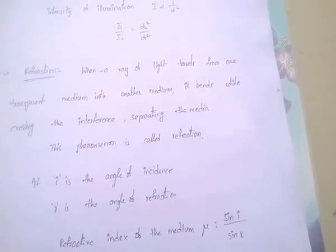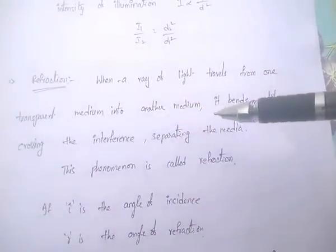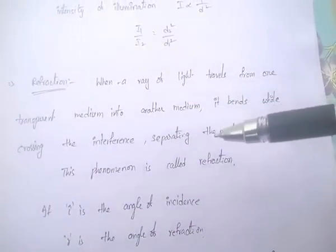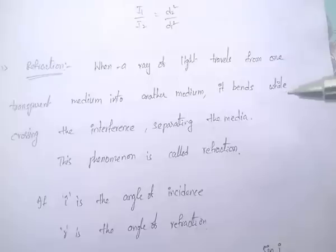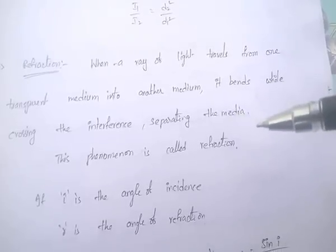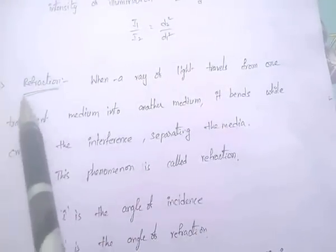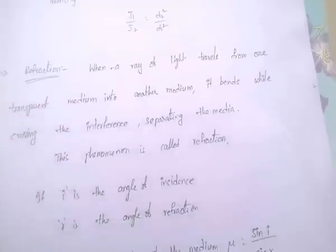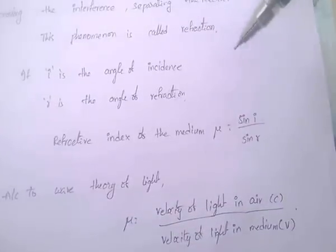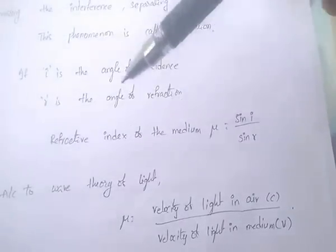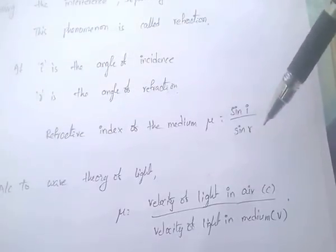Next term: refraction. When a ray of light travels from one transparent medium into another medium, it bends while crossing the interface separating the media. This phenomenon is called refraction. If I is the angle of incidence and R is the angle of refraction, then the refractive index of the medium mu equal to sin I by sin R.